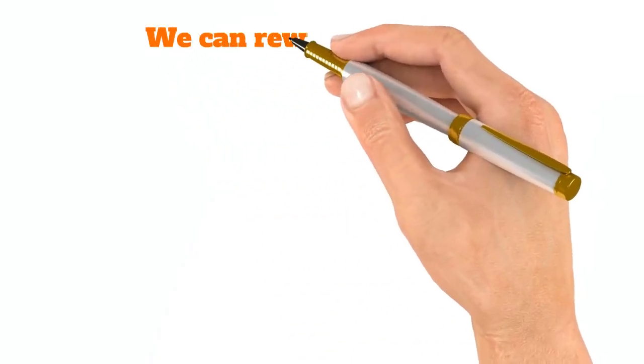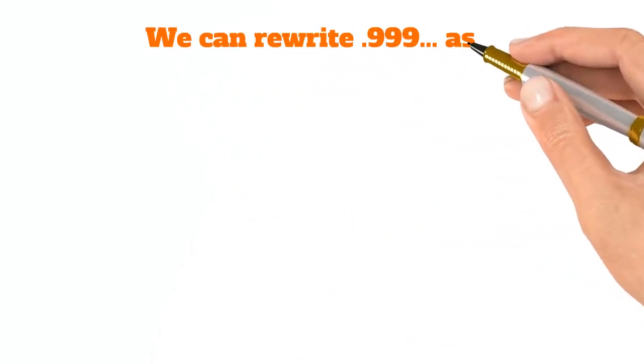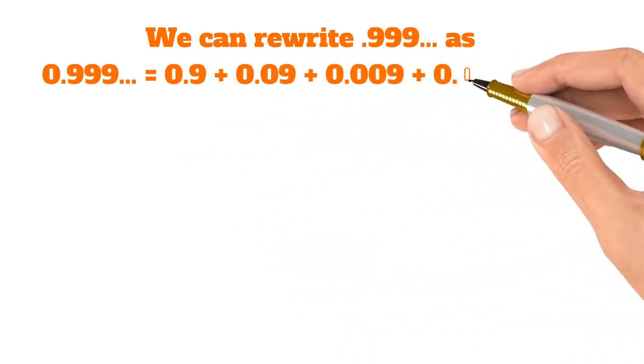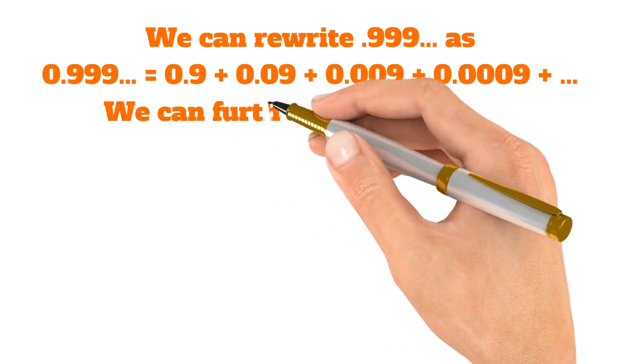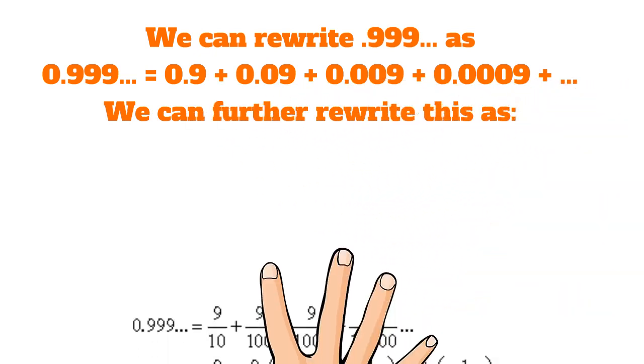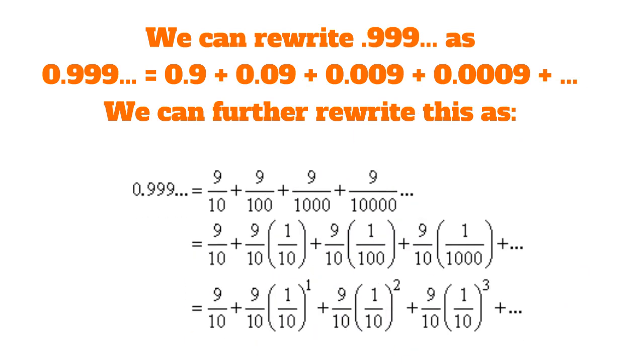We can rewrite 0.9 recurring as 0.9 plus 0.09 and so on. We can further rewrite this as 9 tenths plus 9 one hundredths plus 9 one thousandths and so on. Now factoring out the 9 tenths, we get 9 tenths plus 9 tenths times one tenth and so on. And every time we increase by a factor of 1 tenths.